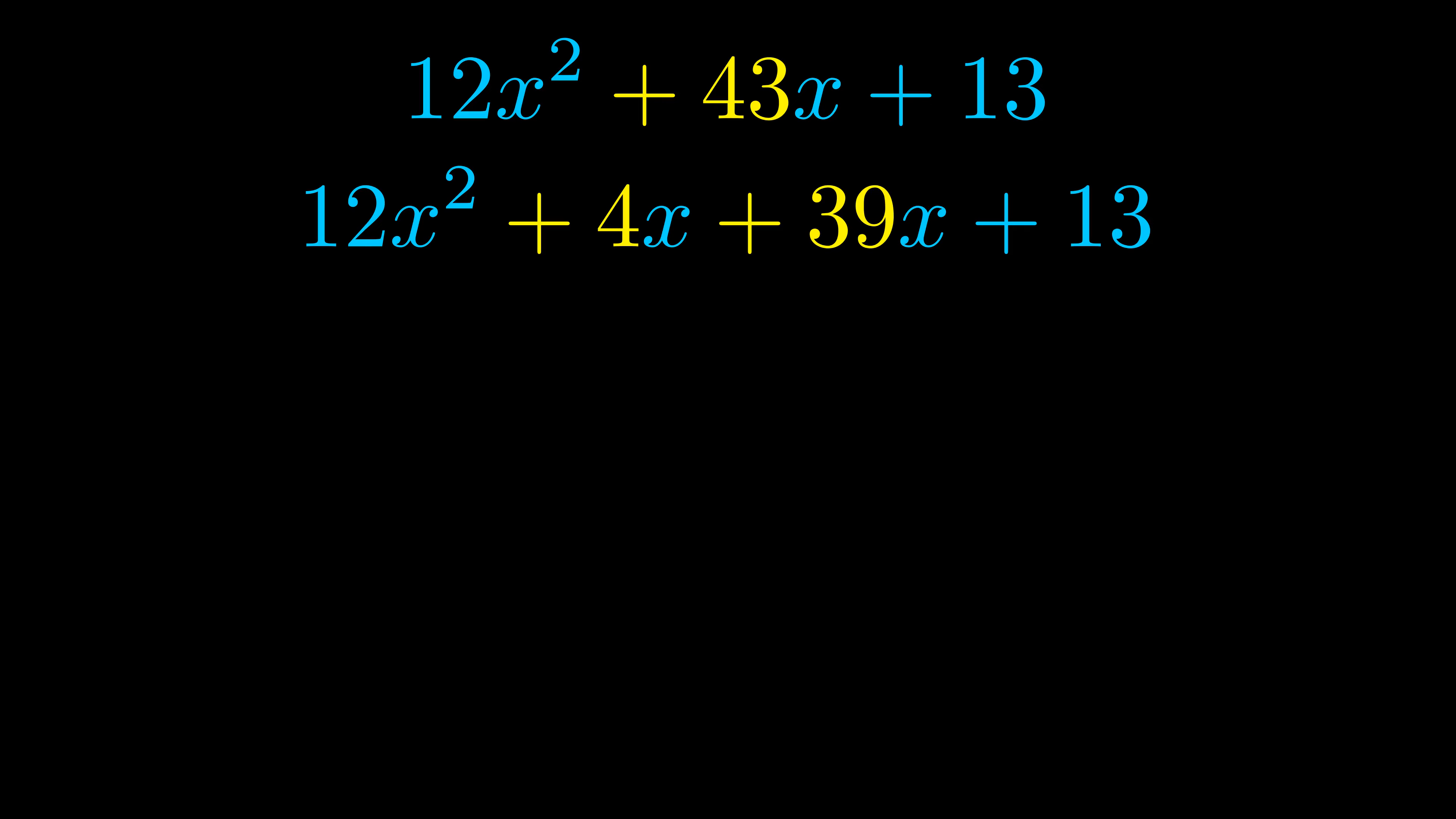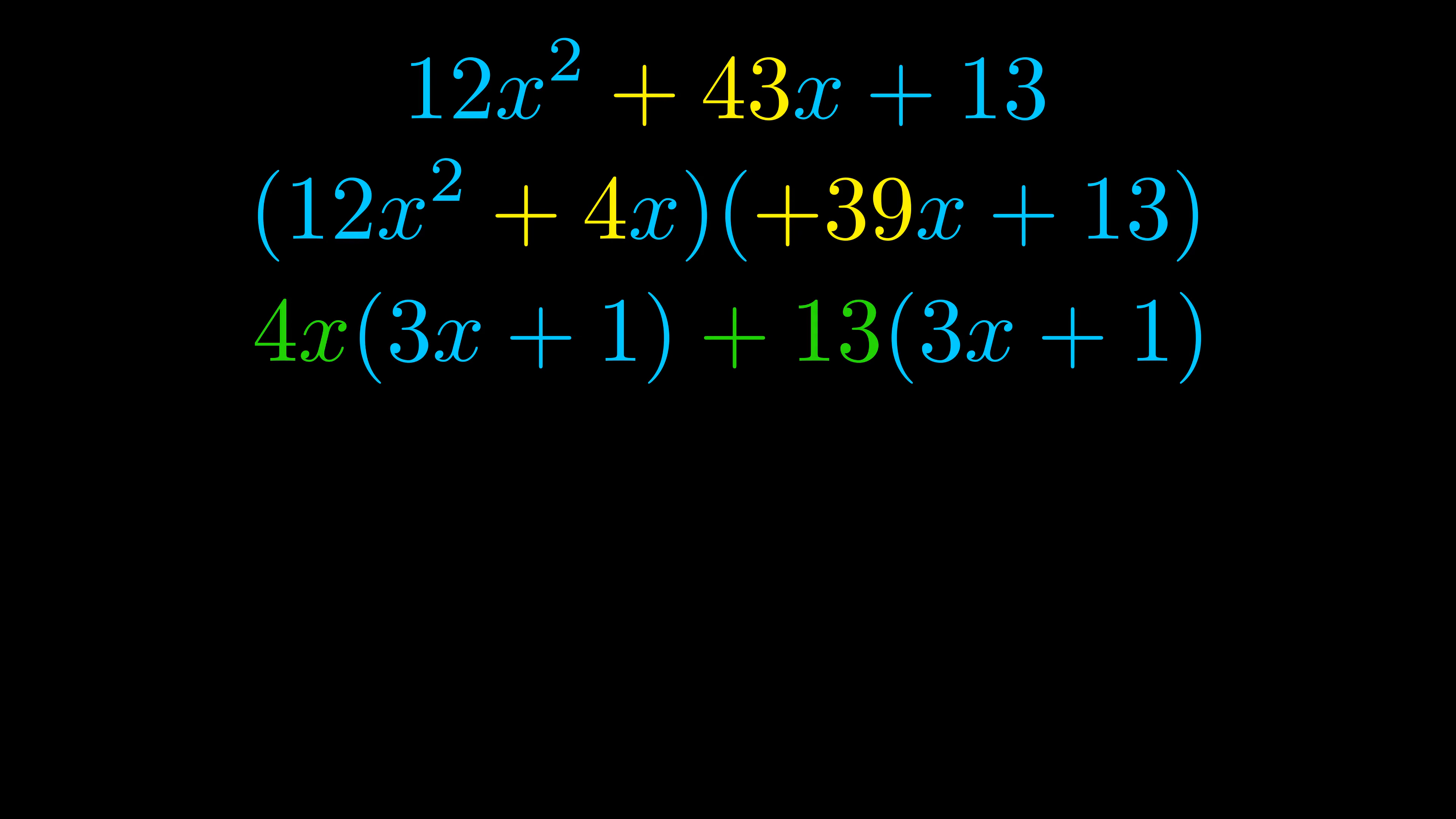Once we've done this, we go ahead and put parentheses around the first term and the last term, and we do that so that we can take the greatest common factor out of both terms. We can see the greatest common factor is now outside in green. Notice also how what remains inside of the parentheses is the same in both cases. The blue values are the same.